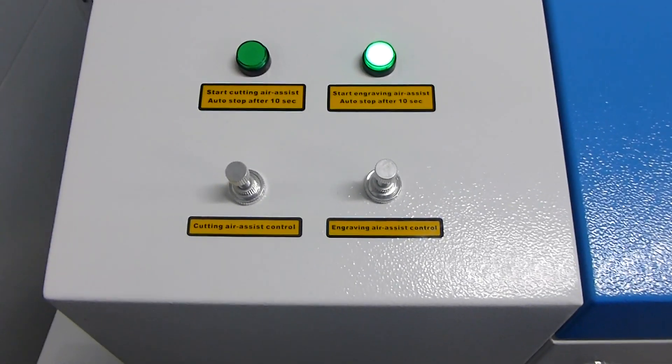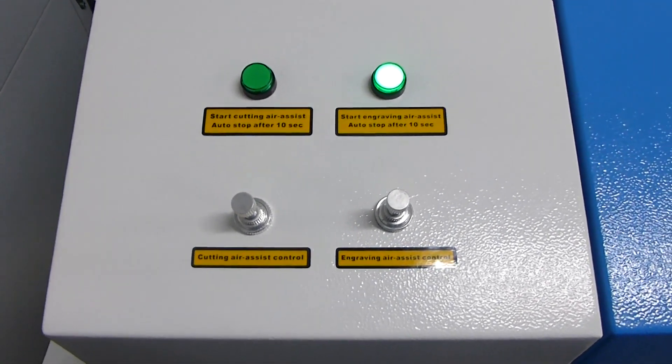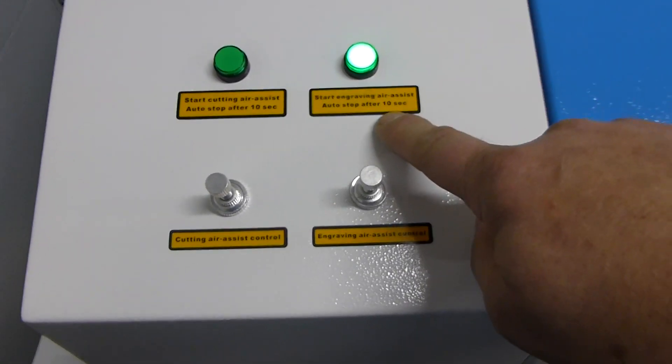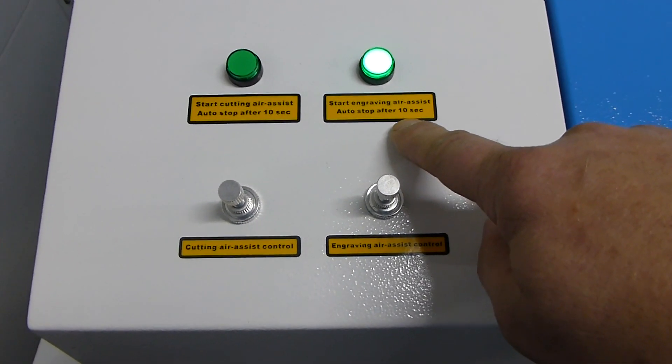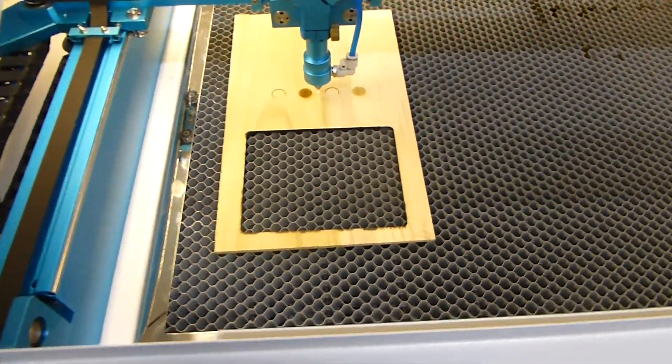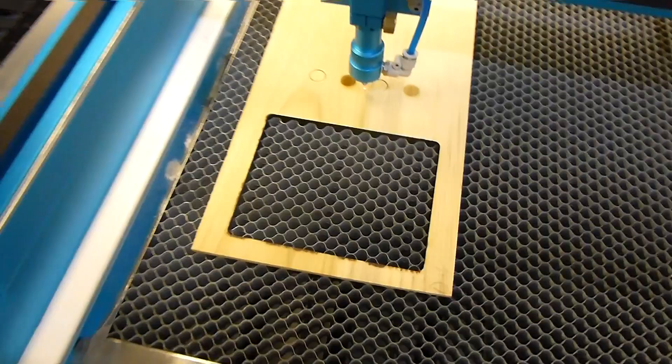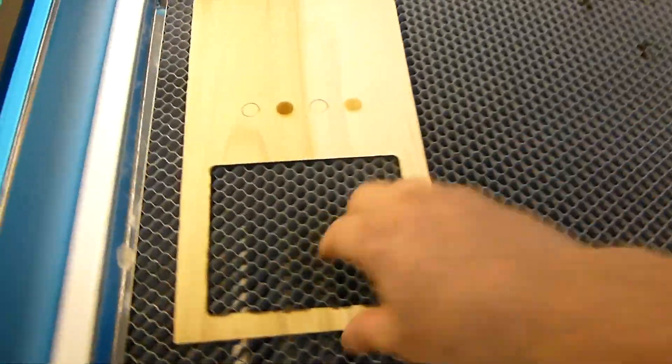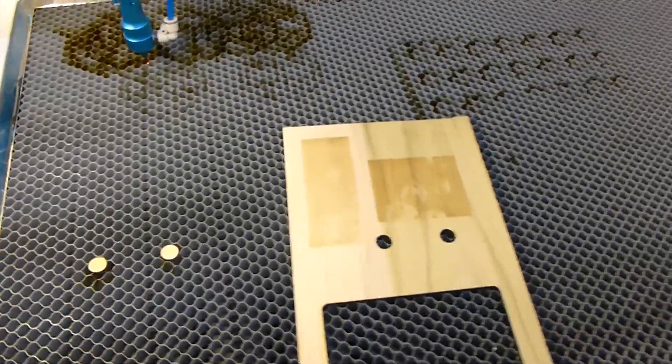So if you choose air assist off, it will always give you this, no matter what. And if you choose air assist on, it will put it in cut mode automatically. Pretty cool.